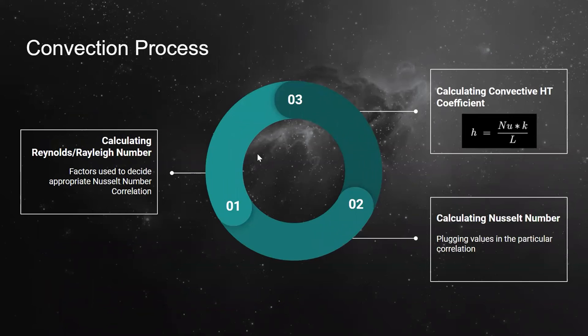And this flowchart summarizes the methodology we have used to go about the calculation. We first calculate the respective numbers to be used in correlations by making all the assumptions and approximations stated. Then we calculate Nusselt number by plugging these values into the correlation and then finally obtain the convective heat transfer coefficient using the relation.